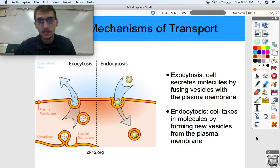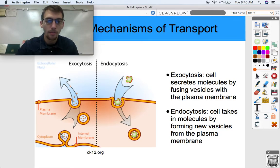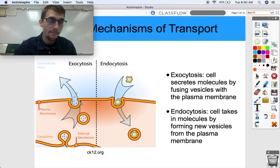Our last types of active transport are exocytosis and endocytosis. If you remember, exocytosis is cells secreting molecules by fusing vesicles with the plasma membrane. This might be like the rough or smooth ER or the Golgi apparatus forming a vesicle, which is just a membrane bubble, sending that out and allowing that membrane bubble to fuse with the plasma membrane, thus releasing the contents into the extracellular fluid. And endocytosis is opposite, right?